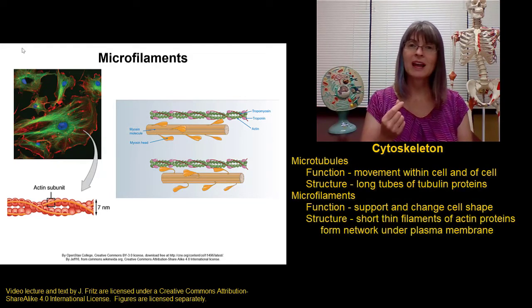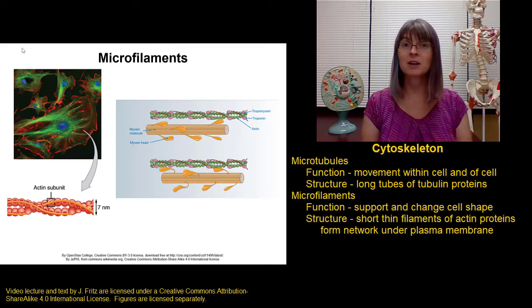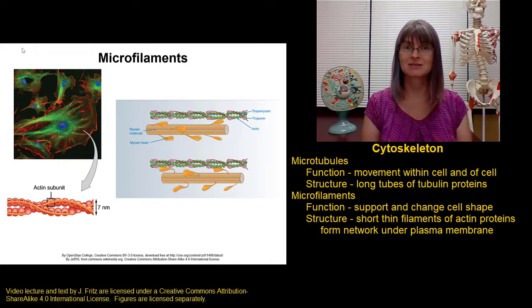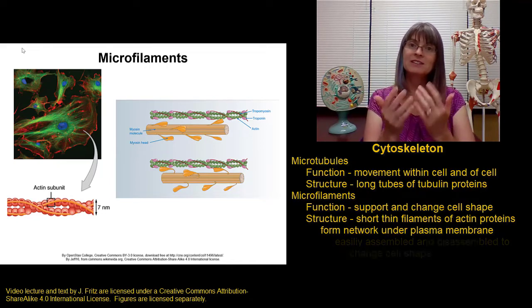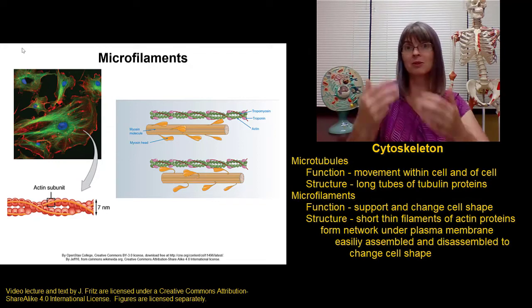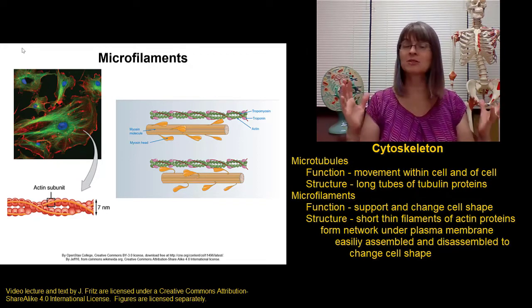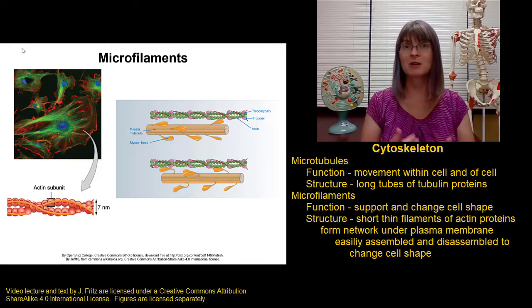Microfilaments are shorter and thinner than microtubules, and they're made of the protein actin. These actin microfilaments and the networks that they create are very dynamic. It's very easy to take actin filaments apart and build them back up again, and that allows some cells to be able to change their shape as needed.